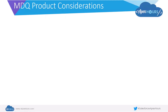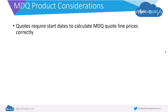MDQ products are very powerful and offer a lot of flexibility. However, there are some important considerations to be aware of. First, when quoting, you need to have a start date — without it, MDQ quote line prices will not calculate correctly, especially where proration is applied, and you will see incorrect data. Also, MDQ products support only month-based subscription term units.